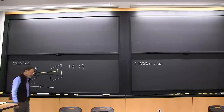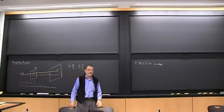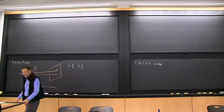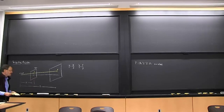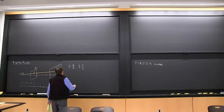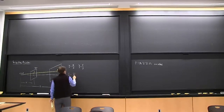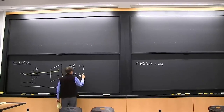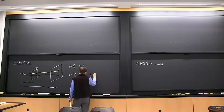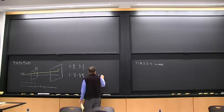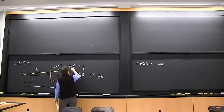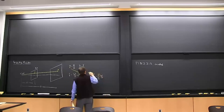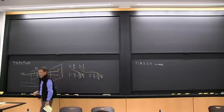We started off talking about the two aspects of image formation: where and how bright. In terms of where, we talked about perspective projections, and in a camera-centric coordinate system it's very easy. We then extended that to be able to talk about motion by differentiating the perspective projection equation.